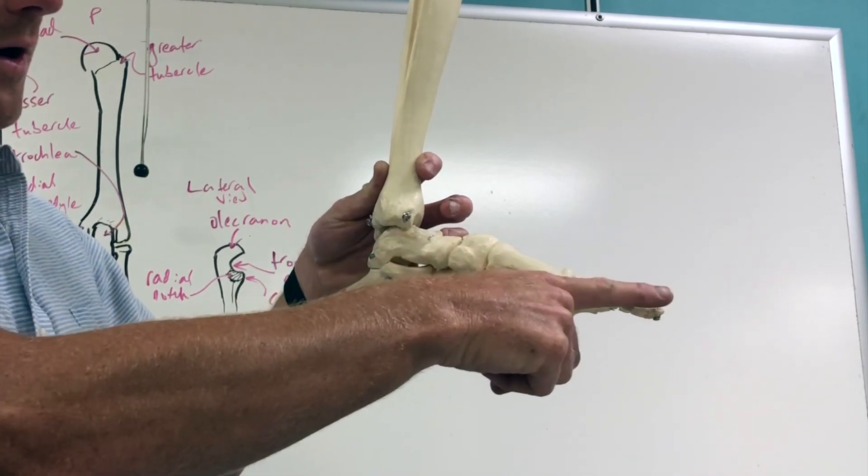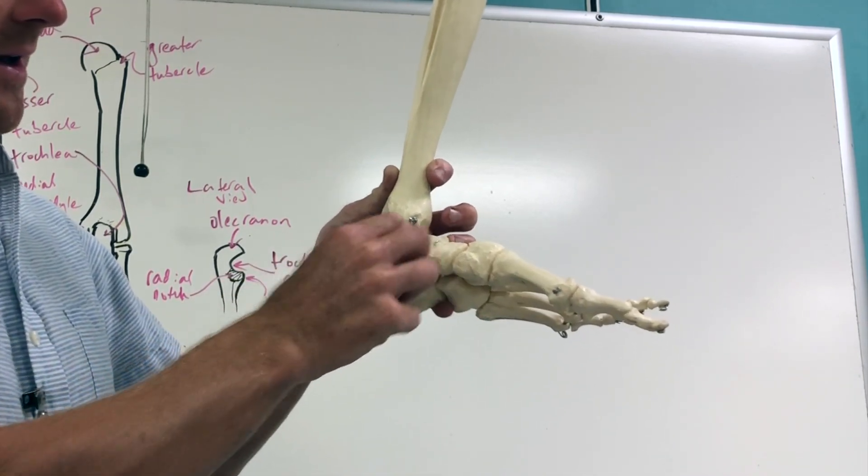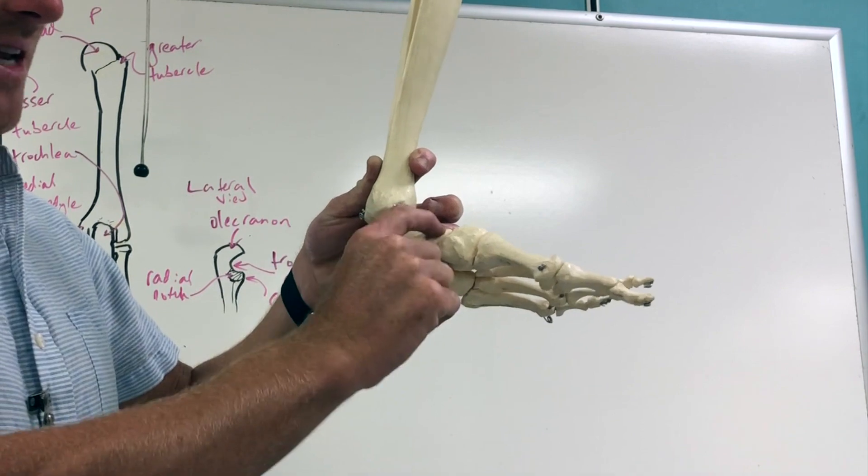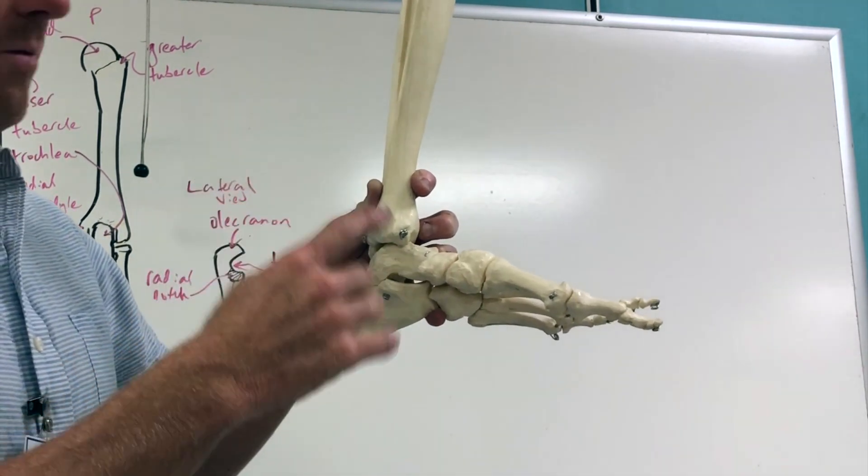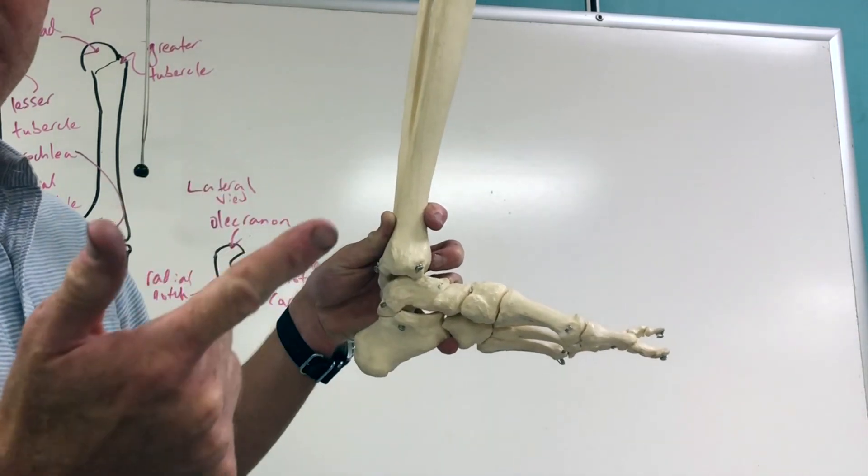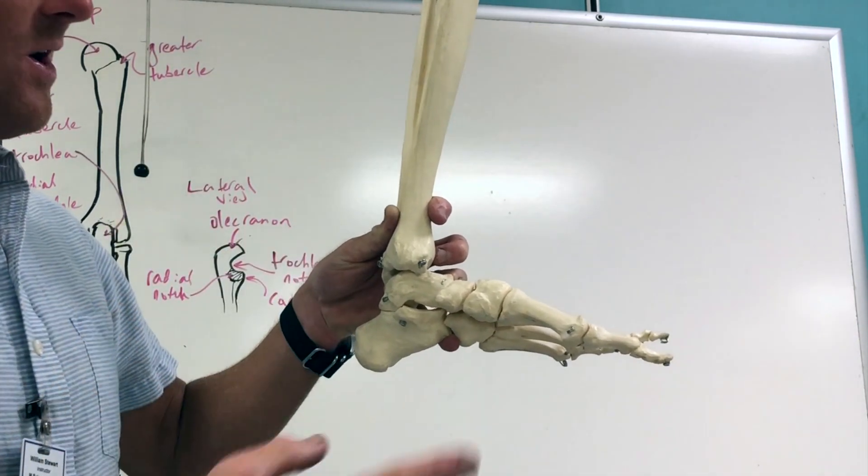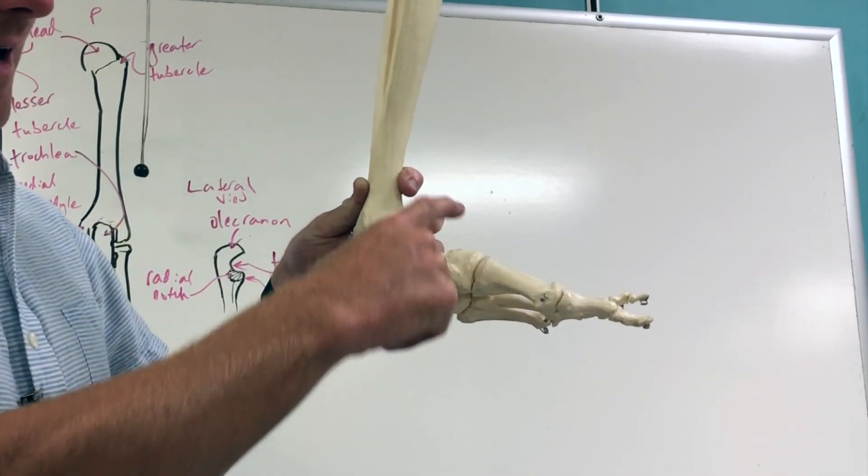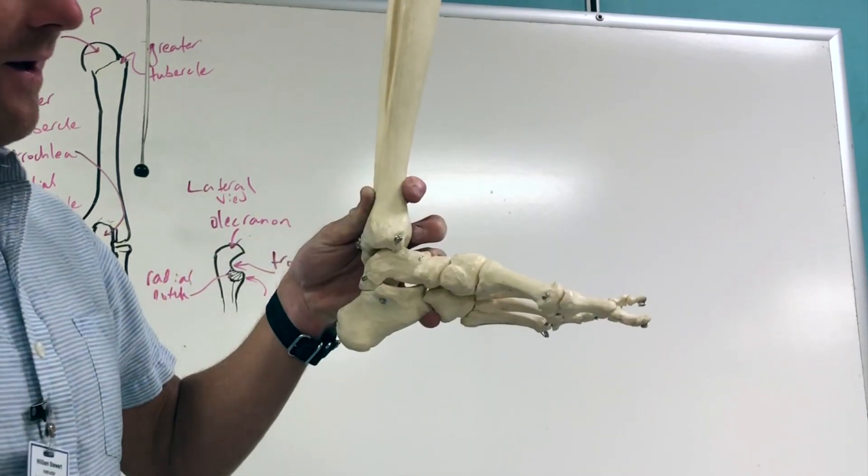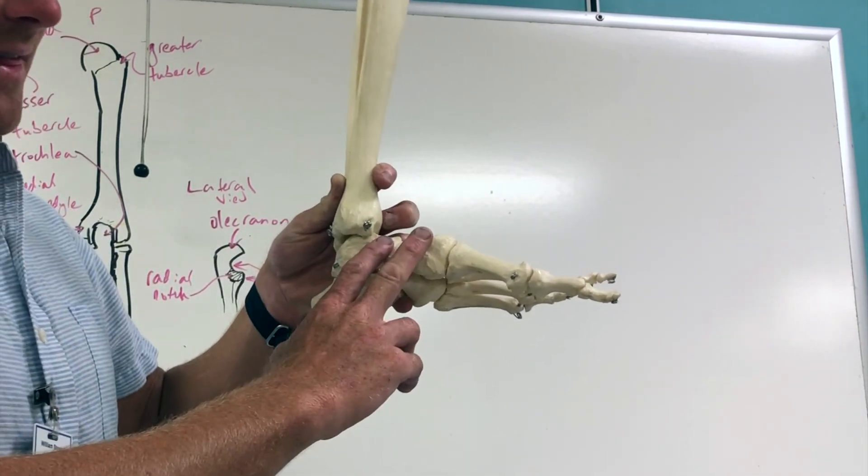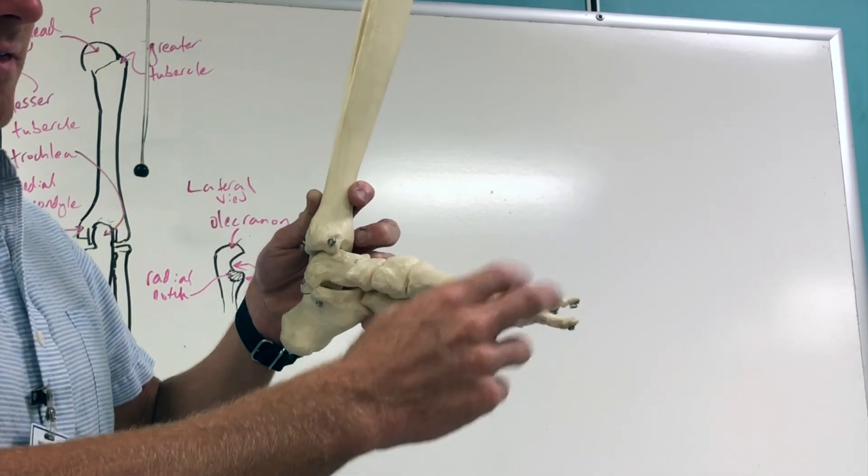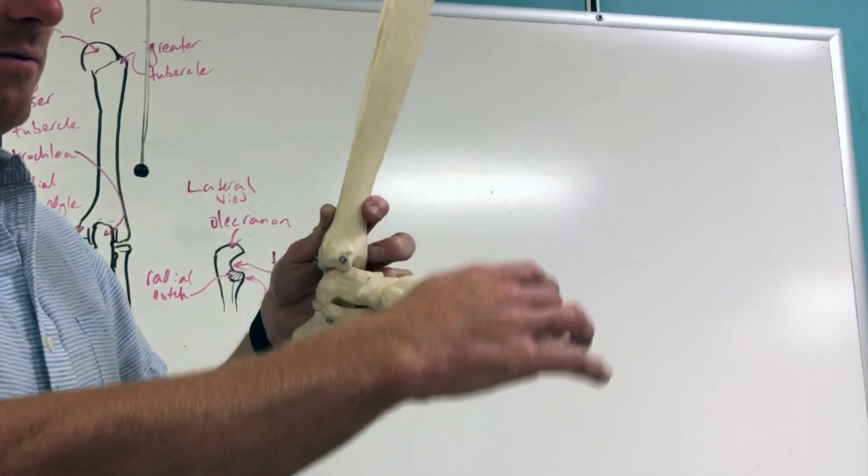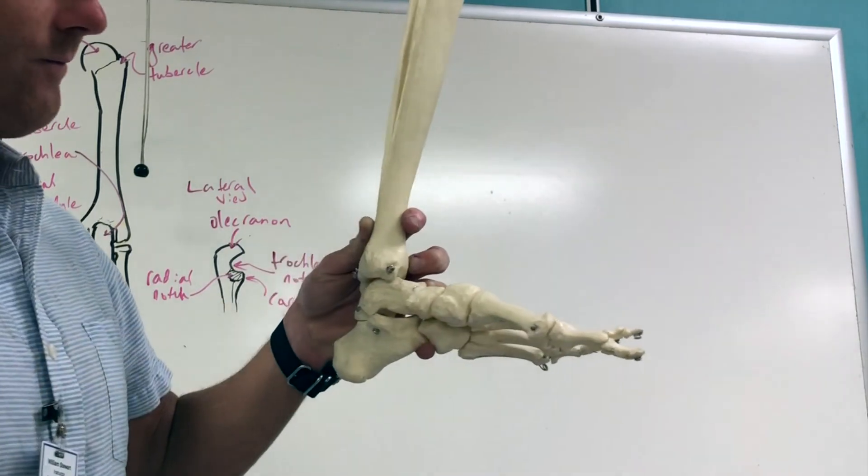As we move more distally on the top of the foot, this talus is gonna connect to the navicular and then the navicular is gonna connect to the three cuneiform bones. You're gonna have a medial, intermediate, and lateral cuneiform bones. You can only see the medial and the intermediate. The lateral is on the other side. After that, that's where we have the metatarsals. This is the metatarsal of the big toe and then the phalanges. Phalanges of the big toe, toe number two, three, four, five.